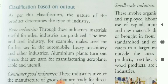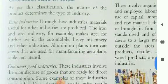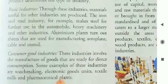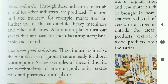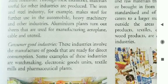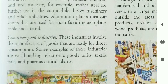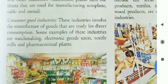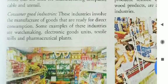Classification based on output: the nature of the product determines the type of industry. Basic industries produce materials useful for other industries. The iron and steel industry, for example, makes steel for further use in the automobile, heavy machinery, and other industries. Aluminium plants produce sheets used for manufacturing aeroplanes, cables, and utensils.